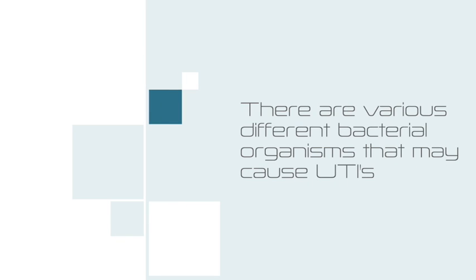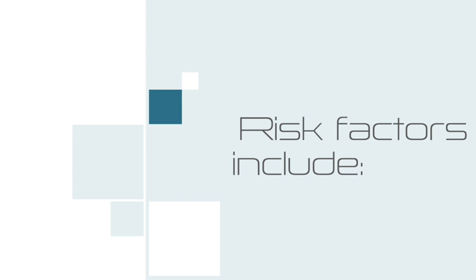There are various organisms that may be the cause of a UTI. UTIs are most commonly caused by E. coli, resulting in 90% of all UTI cases. This is because E. coli is found as natural flora in the large intestine and therefore will be present in faecal matter. The perineum is a reservoir for E. coli present in faecal matter and provides E. coli the opportunity to be introduced into the urethra and spread throughout the urinary tract system.